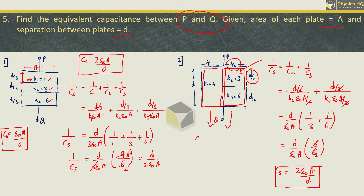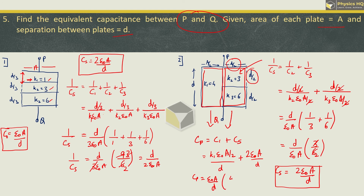Now finally we find the parallel equivalent of both sides. Parallel equivalent is simple addition: C1 plus the series combination we found. C1 equals K1 epsilon naught, area A by 2, divided by full distance D. Plus Cs, which is 2 epsilon naught A by D. Taking epsilon naught A by D common, K1 is 4, and the A by 2 leaves a 2 in the denominator. So we have 4 over 2 plus 2, which gives 2 plus 2 equals 4. So finally the parallel equivalent is 4 epsilon naught A by D.